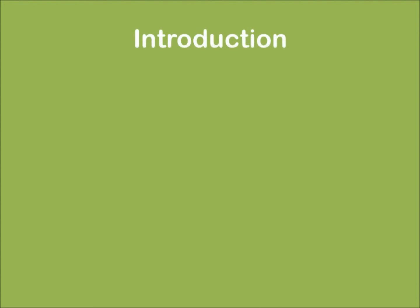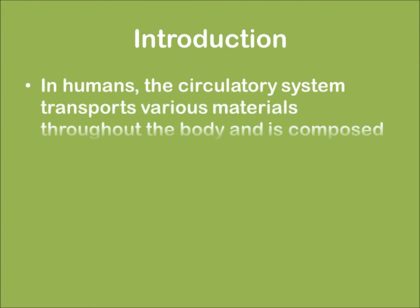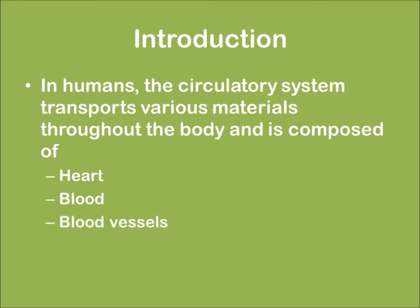Coming to the introductory part of this lecture. In humans, the circulatory system transports various materials throughout the body and is composed of three things — mainly the heart, the blood, and the blood vessels.